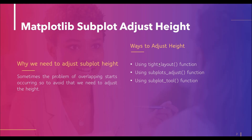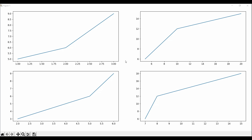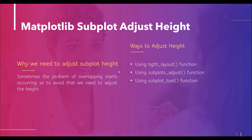While dealing with subplots we have multiple figures in one area, but sometimes the problem of overlapping starts occurring. To avoid this problem we need to adjust the height of the subplot, and there are three different ways by which we can do that.